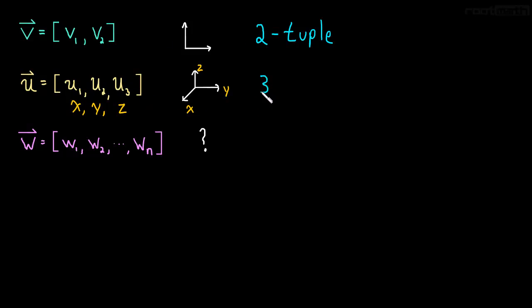Just like u is a three-tuple, it's an ordered list of three components. And w is an n-tuple. It's an ordered list of n components.